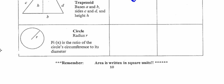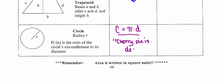The circle is an interesting and unique character because it doesn't have sides. The fancy name that we have for the perimeter of a circle is circumference. We find the circumference of a circle by multiplying pi times diameter. The way I remember this formula is that cherry pi is delicious — circumference equals pi times diameter. You do need to have that formula memorized.